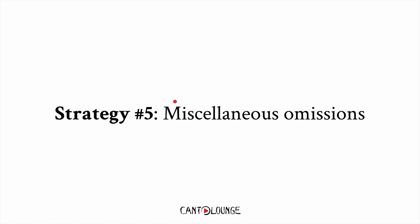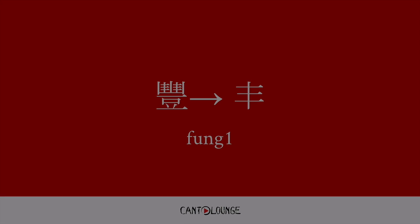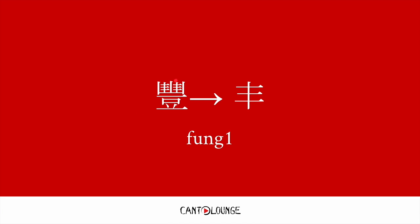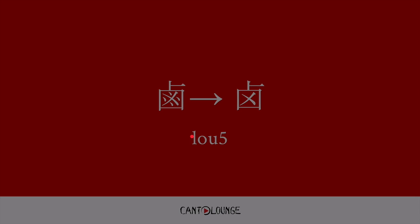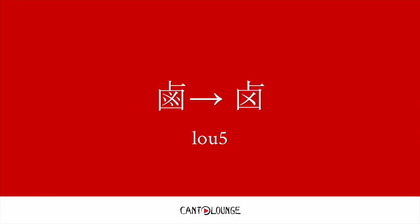Strategy number five includes miscellaneous omissions. For example, 封 — this only retained a small bit and everything else was removed, 封 meaning abundant. And 路 — they got rid of the four dots in there and simplified that, though it's difficult to explain precisely.